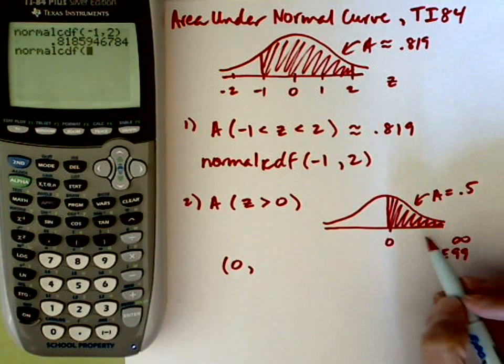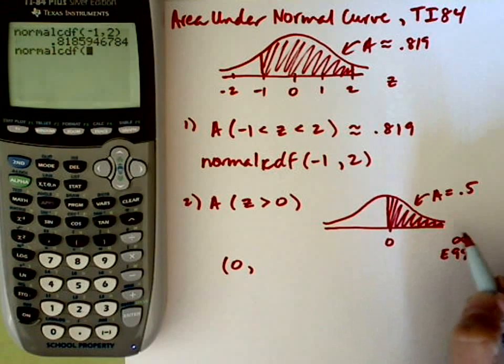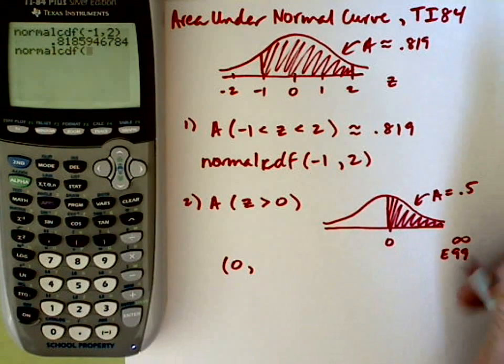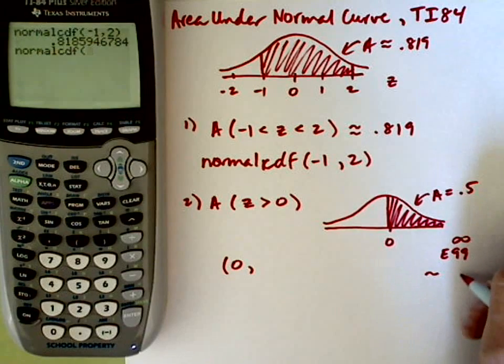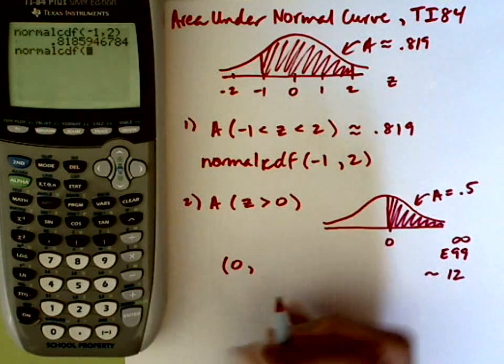So you can use e99, but significant z-scores are really just 1, 2, and 3, and maybe up to 4. So we could also use just something sort of large for a z-score, like 12 or something like that. So I'll show you how these both work.